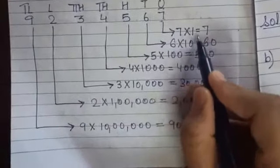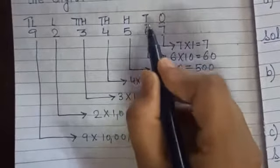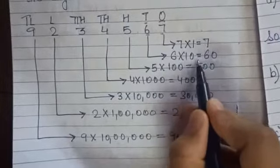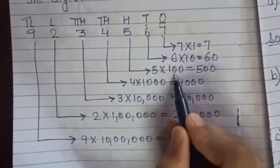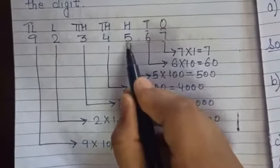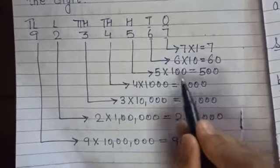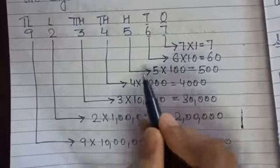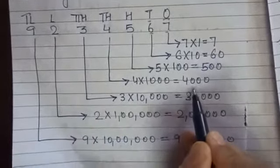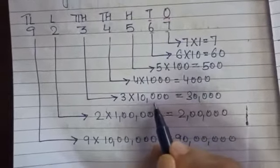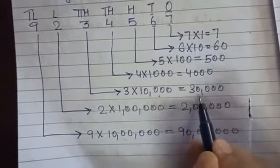So 7 multiplied by 1 equals 7. Next is 6: its place value is 10, so 6 multiplied by 10 equals 60. Next is 5: 5 multiplied by 100 equals 500. Next is 4: 4 multiplied by 1,000 equals 4,000. Next is 3: 3 multiplied by 10,000 equals 30,000.